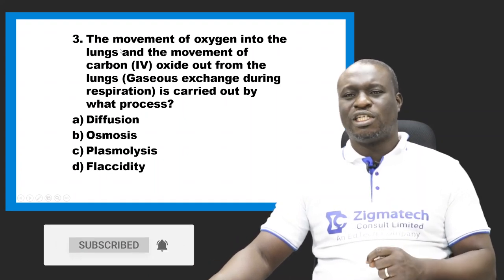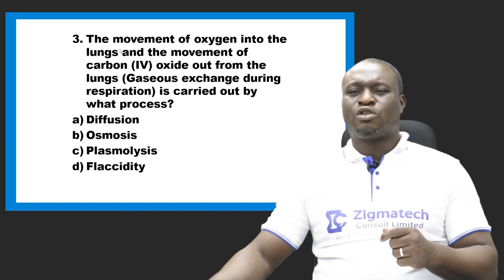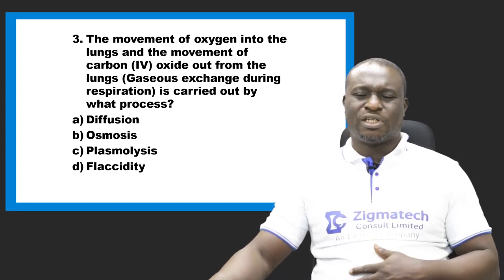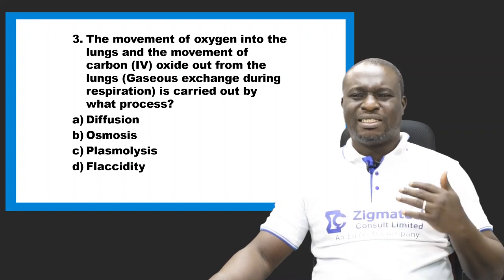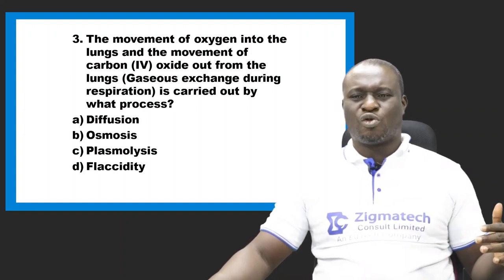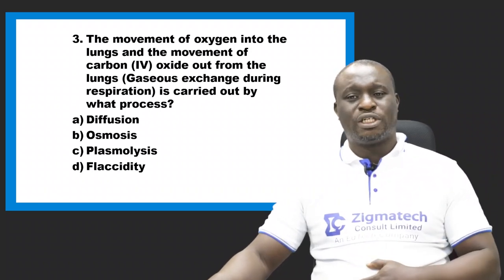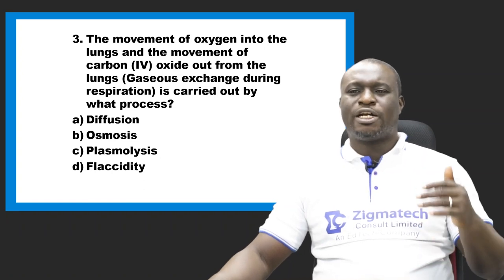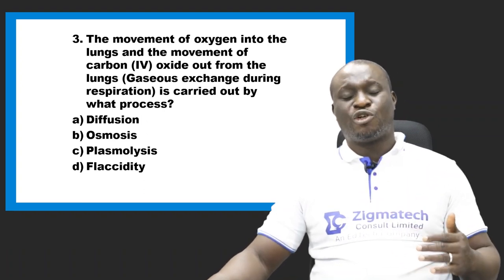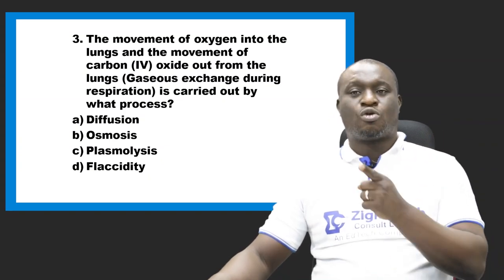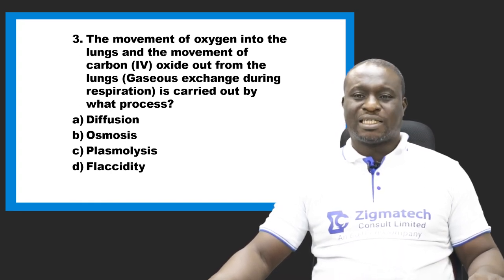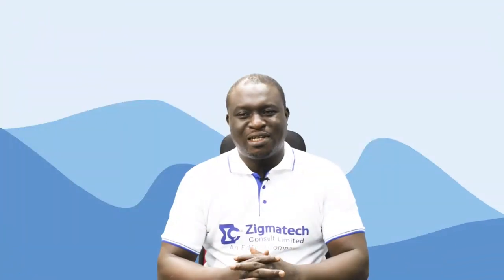Question 3: The movement of oxygen into the lungs and the movement of carbon dioxide out from the lungs — that is gaseous exchange during respiration — is carried out by what process? Is it diffusion, osmosis, plasmolysis, or flaccidity? Plasmolysis and flaccidity are not discussed here. Osmosis involves water molecules only, but this question involves gaseous molecules — not water. Therefore, the correct answer is diffusion.